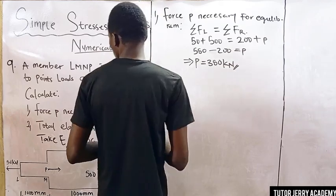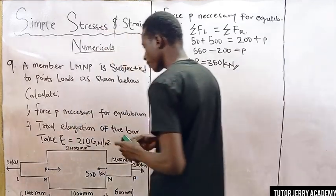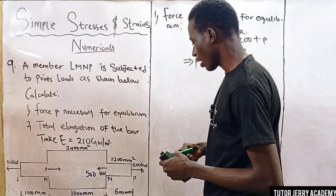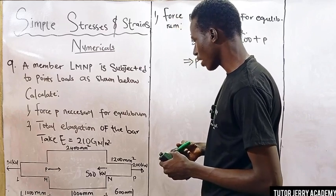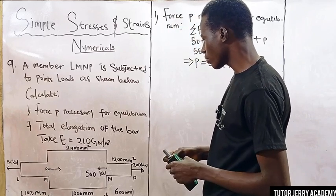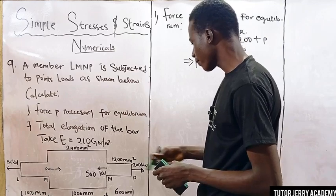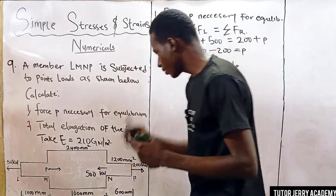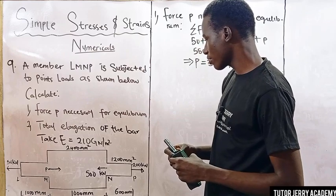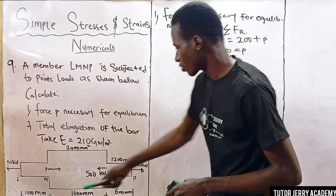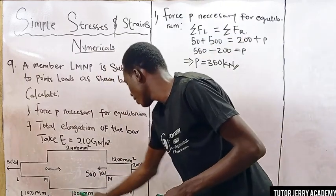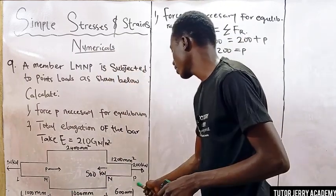Next, we are asked to find the total elongation of this bar. We are going to be considering this bar in three sections: LM, MN, and NP.